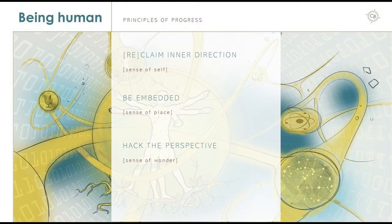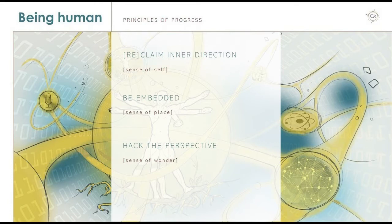The second principle, 'be embedded,' is about finding and refining your place in ecosystems — not only nature, but also the technosphere or the ecosystems within team human. What is the chain in which I'm operating and what is my responsibility? To whom am I connected? The third, 'hack the perspective,' is all about turning things upside down, finding a new perspective, creating surprise — because what happens to surprise if artificial intelligence is literally doing anything even before I have asked it? That's an interesting field to research.